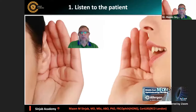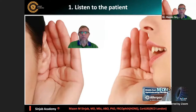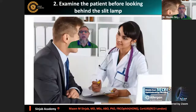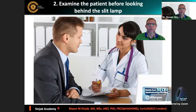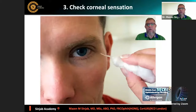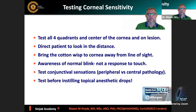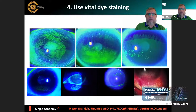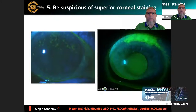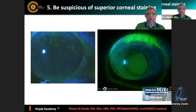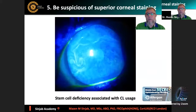The pearls in management of ocular surface disease: you have to listen to the patient and spend time hearing their symptoms. Look at their eyes while they talk - you may notice signs like low blinking rate. Check corneal sensation in every dry eye patient across all four quadrants, and also test conjunctival sensation. Corneal staining is mandatory. If staining is superior, be suspicious of floppy eyelid changes, superior limbic keratoconjunctivitis, or contact lens-induced limbal stem cell deficiency.